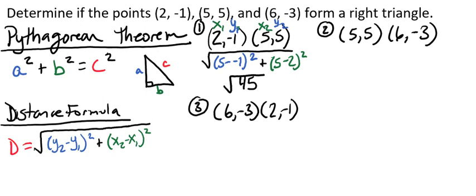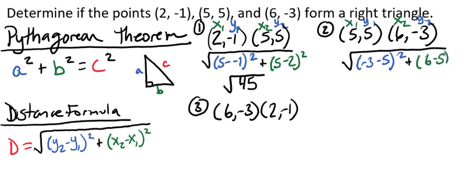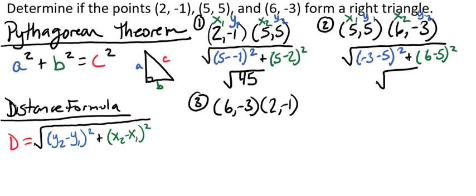For the second distance, here we have x₁, x₂, y₁, and y₂. We plug those in and that gives us √((−3 − 5)² + (6 − 5)²). We plug that into our calculator and get the square root of 65.